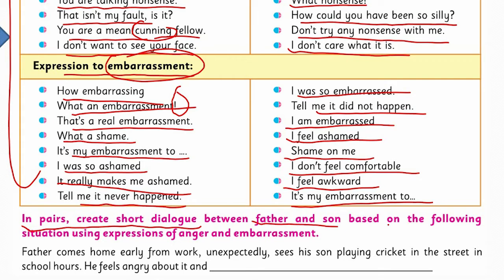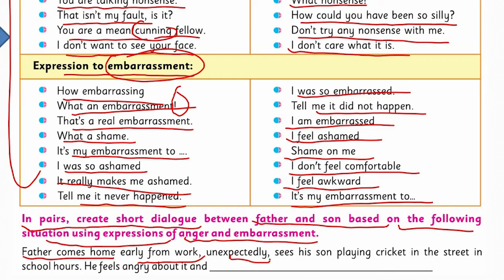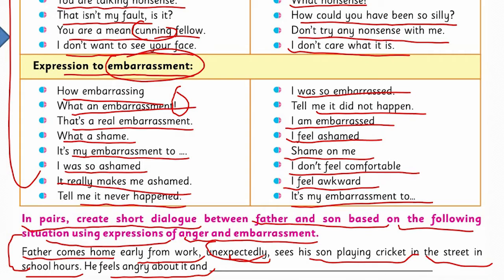In pairs, create short dialogues between father and son based on the following situation using expressions of anger and embarrassment. The situation: father comes home early from work unexpectedly and sees his son playing cricket in the street during school hours. He feels angry about it. Aapne kya karna hai — father aur son ke saath dialogue create karna hai jis mein aisi situation hai. Ghusse ke aur sharmindagi ke expressions show karne hain. Father ghussa ho raha hai kyunki woh ghar aya hai kaam se jaldi, unexpectedly, aur usne dekha uska beta jo hai gali mein khel raha hai school hours mein.